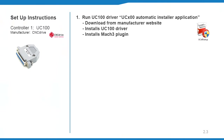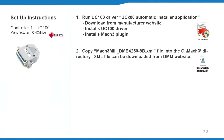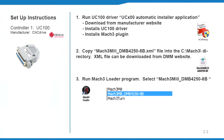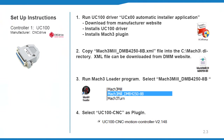Follow the UC100 manufacturer instructions for setup with your PC, which includes installing the driver and Mach 3 plugin. Since we are using the DMB breakout board, we need to load the XML file for this board. Copy the Mach 3 DMB4250 XML file into the C:\Mach3 directory. Run Mach 3 loader and select the Mach 3 DMB4250 profile. At the plugin screen, select the UC100 CNC, then clear to reset and finish.